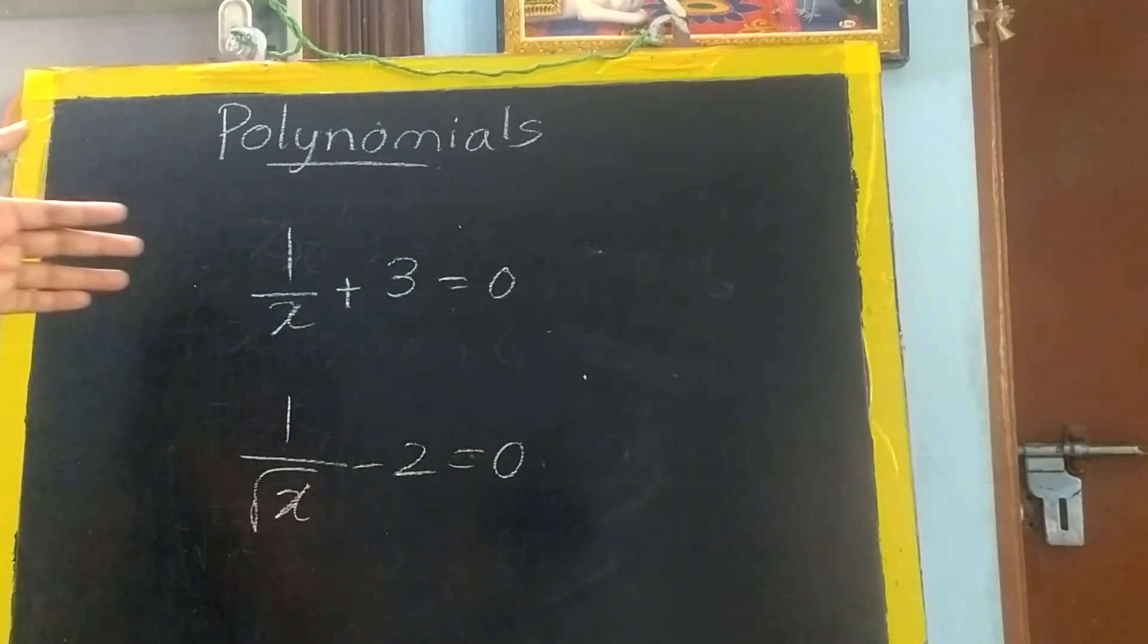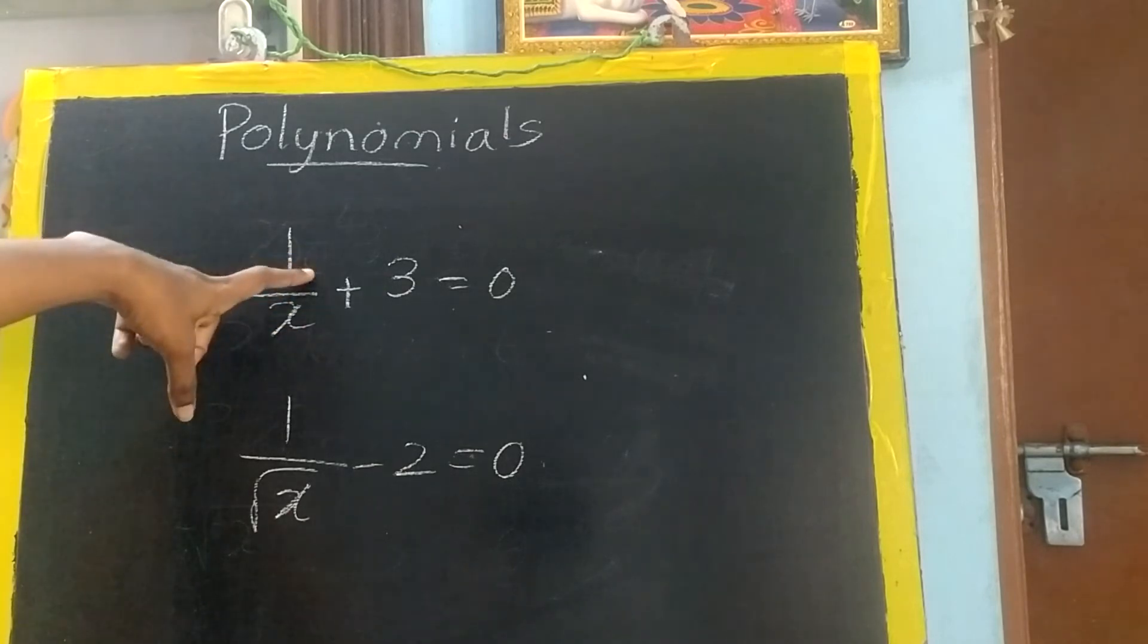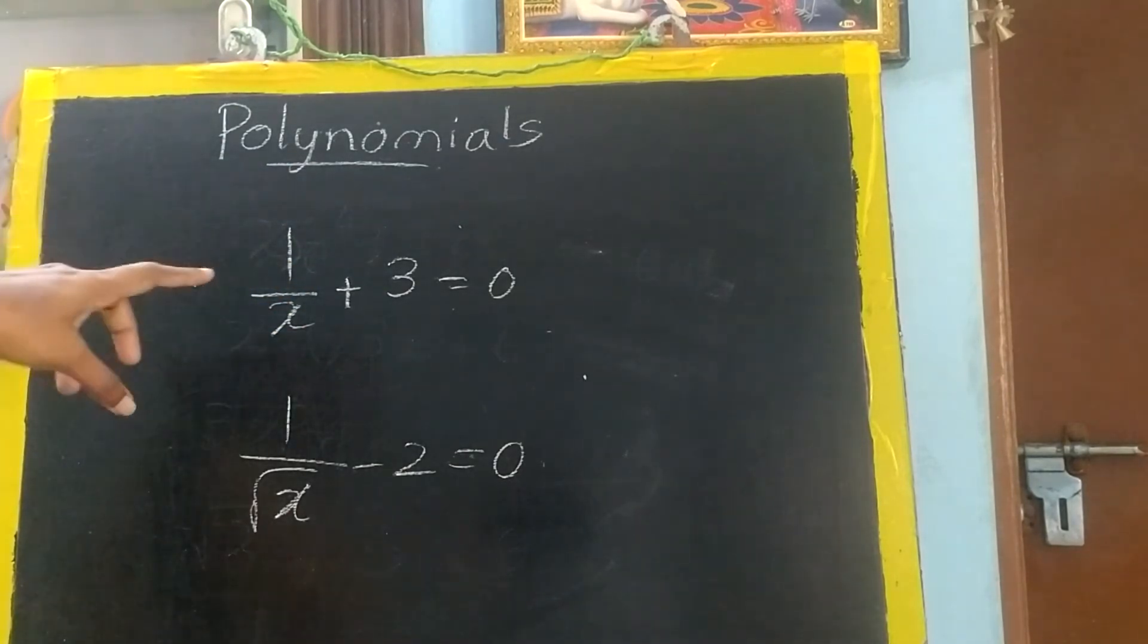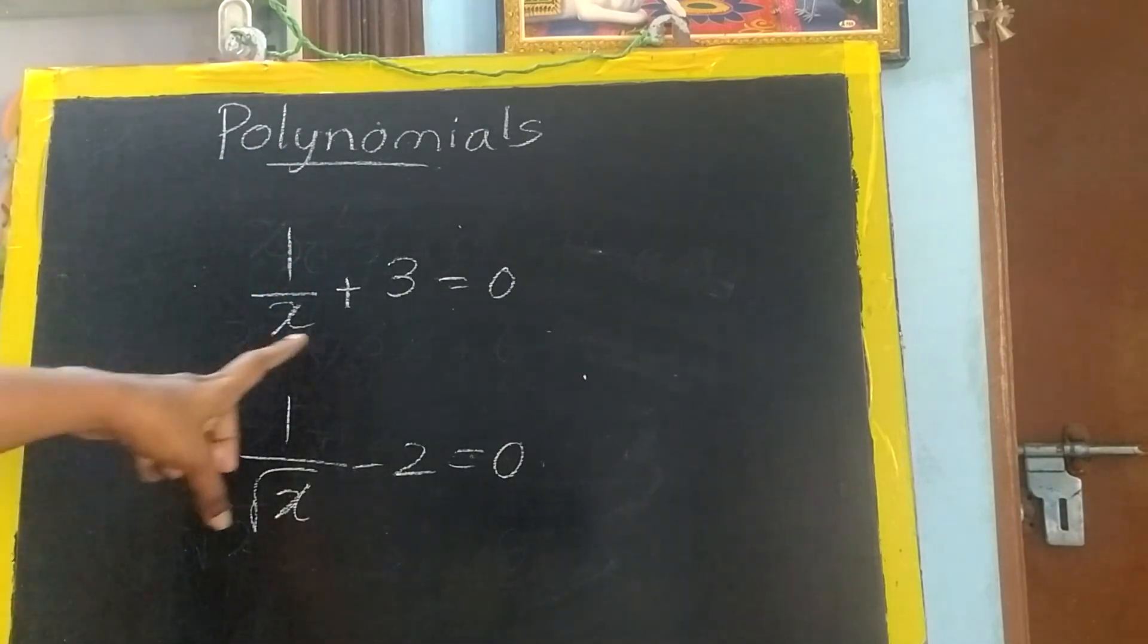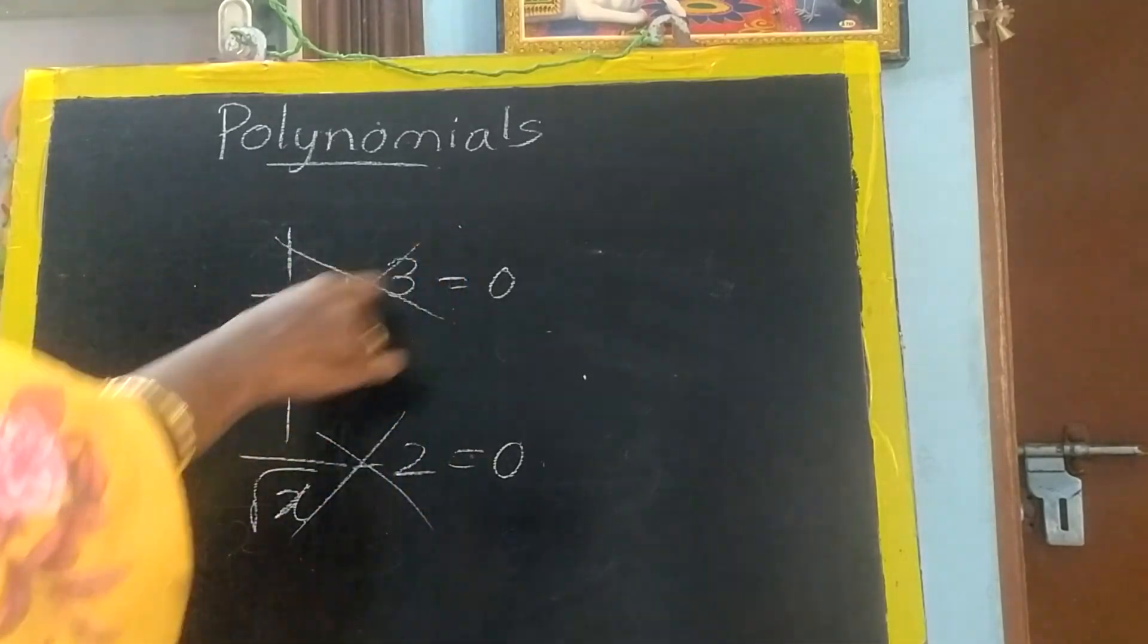Now you can see these are not polynomials. Why? Because x is down in the denominator. When I take it up, it will become x power minus 1. So that means minus is imaginary, that is not a real number. So this is also not a polynomial. Even this is also not a polynomial.